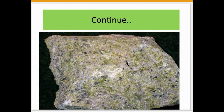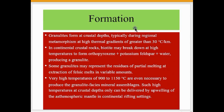Granulite forms at crustal depths typically during regional metamorphism at high thermal gradients of greater than 30 degrees Celsius per kilometer. In continental crustal rocks, biotite may break down at high temperature to form orthopyroxene plus potassium feldspar plus water, producing a granulite.